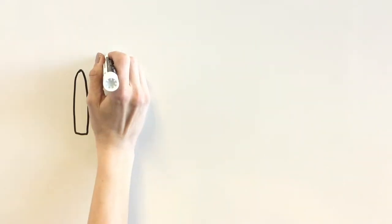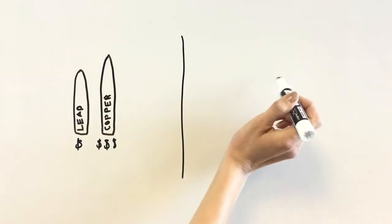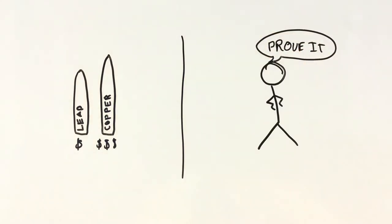Some hunters still use the traditional lead ammunition, arguing that alternatives like copper bullets are too expensive, or that there isn't enough evidence to prove lead bullets are bad for wildlife. But in this case, the evidence is pretty clear.